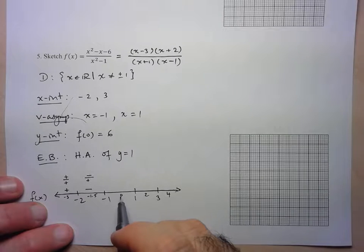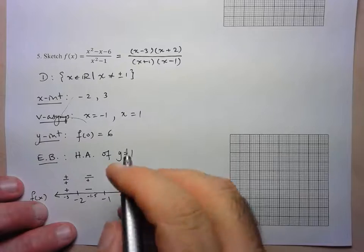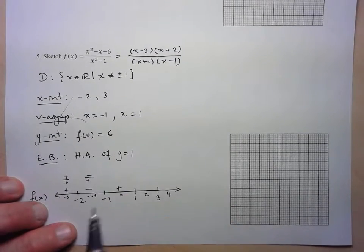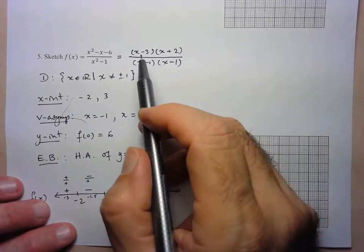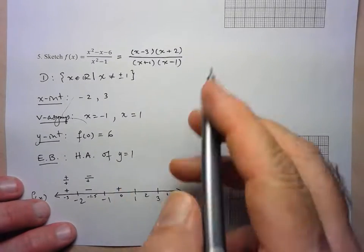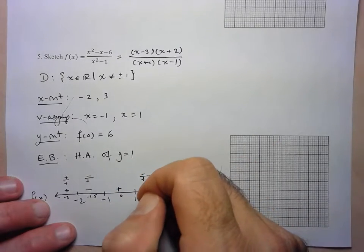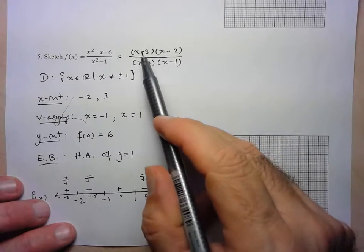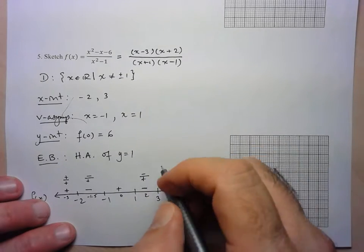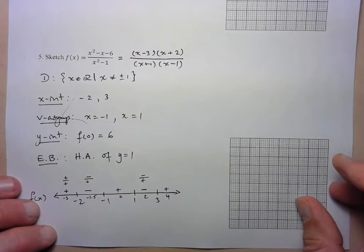For x = 0, I already know f(0) = 6, which is positive, so I don't need to recheck. For x = 2: numerator gives (-)(+) = negative; denominator gives (+)(+) = positive; result is negative. For x = 4: all four factors are positive, so the result is positive.